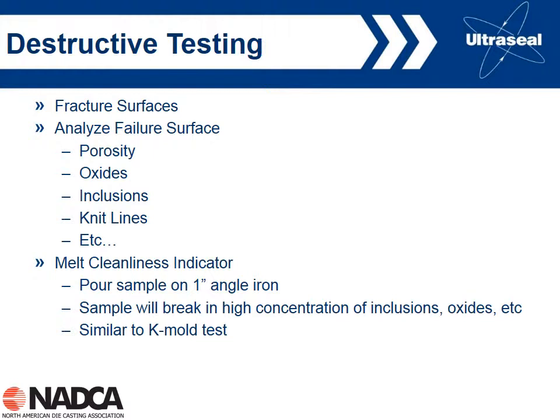A simple method to get an indication of melt cleanliness is to use a melt cleanliness indicator similar to the K-mold test. Basically, you pour a sample on a one-inch angle iron, let it solidify, break it, and look at the fracture to get an idea of possible defects in the metal. One thing worth noting: with this method you will get shrinkage because the casting solidifies without intensification pressure, so the porosity present may not be representative — but other defects like inclusions and oxides will be very representative of the melt quality. We'll talk about the K-mold test a little bit later.